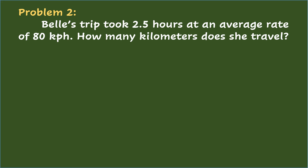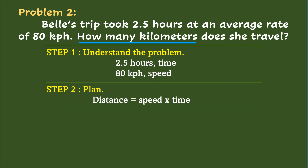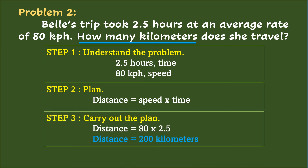Problem 2: Bell's trip took 2.5 hours at an average rate of 80 kilometers per hour. How many kilometers does she travel? Step 1 — Understand the problem: the missing value is the total number of kilometers, which is the distance; the time is 2.5 hours and the speed is 80 kilometers per hour. Step 2 — Plan: since distance is missing, use distance equals speed times time. Step 3 — Carry out the plan: distance equals 80 times 2.5, which equals 200 kilometers.